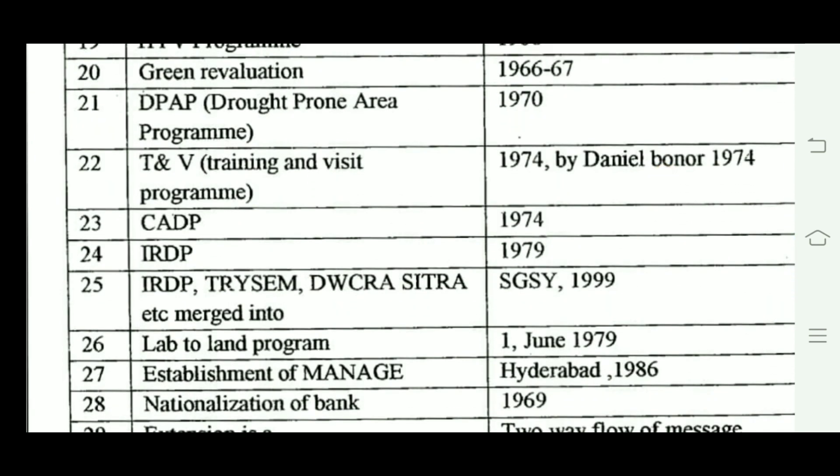Under IRDP, associated programs include TRYSEM, DWCRA, and SITRA. TRYSEM is Training of Rural Youth for Self-Employment. DWCRA is the Development of Women and Children in Rural Areas. SITRA is the Supply of Improved Toolkits to Rural Artisans.